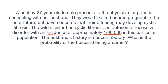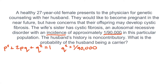We're told that the incidence of cystic fibrosis in this population is approximately 1 in 90,000. This represents the frequency of individuals with the disease. From the Hardy-Weinberg equation, the genotype frequency is P squared plus 2PQ plus Q squared equals 1. The frequency of the disease is represented by Q squared, so Q squared equals 1 over 90,000. The question asks for the probability of the husband being a carrier, and 2PQ represents the carrier frequency. So we need to solve for 2PQ using both equations.